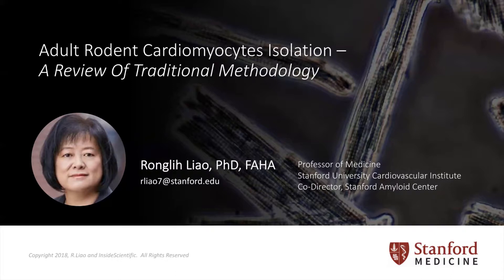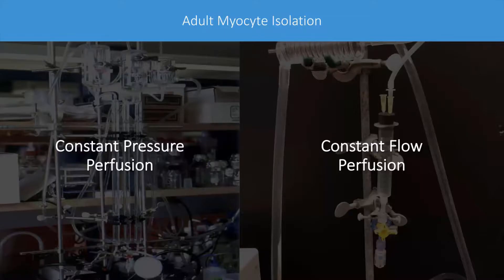Thank you, Liam, for the nice introduction. I'm Rongli Liao from Stanford School of Medicine, and for the next 10-15 minutes, I would like to share a couple of methods that my laboratory has been using to produce high and consistent quality adult cardiomyocytes from mice and rats. In general, either adult rat or mouse cardiomyocytes can be isolated using isolated heart perfusion with either constant perfusion pressure or constant flow mode. Today, I will touch upon both methods and also how to hang and position hearts for maximum efficacy.